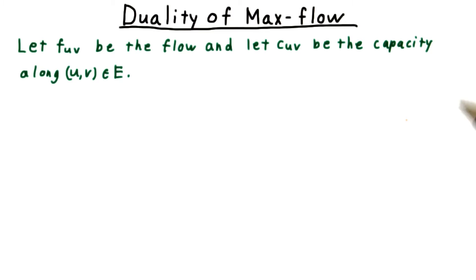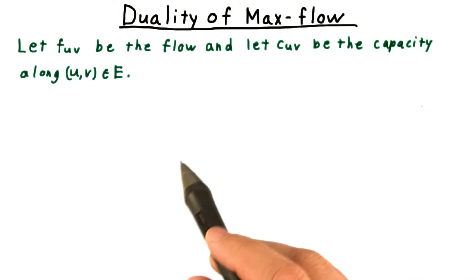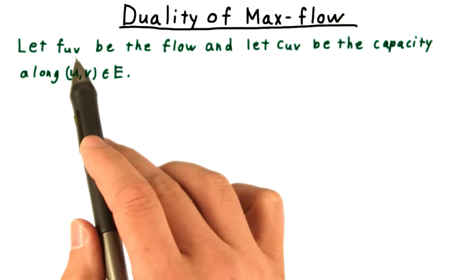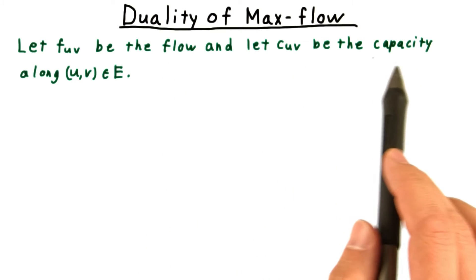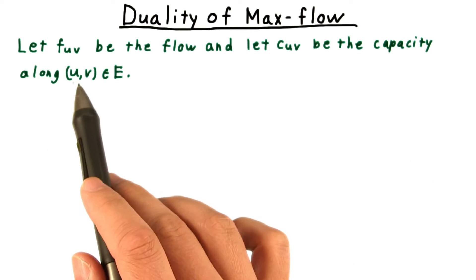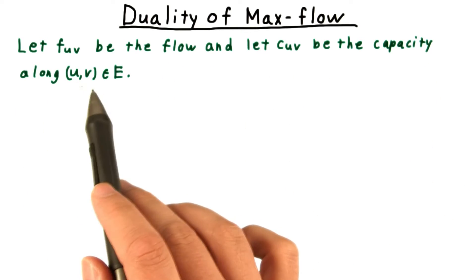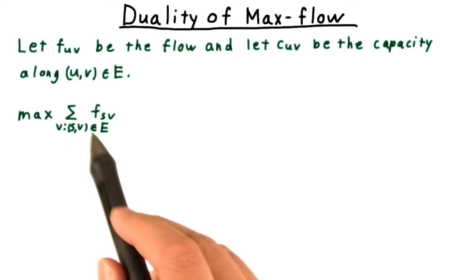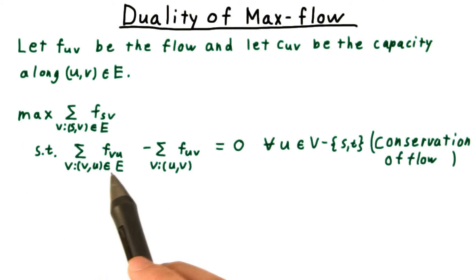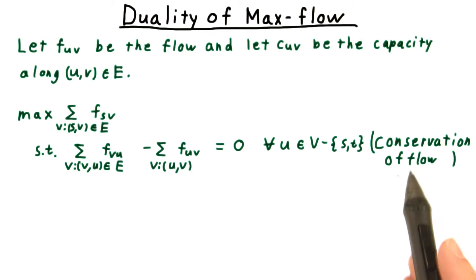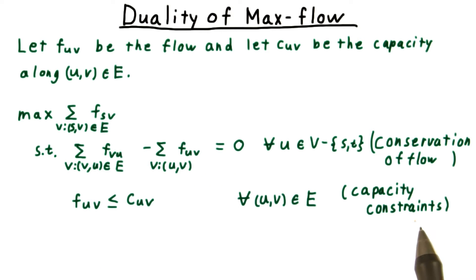For completeness, we'll go ahead and explore duality in the context of the maximum flow problem as well. We can cast it as a linear programming by letting f_uv be the flow and letting c_uv be the capacity along an edge uv. Our goal is to maximize the flow out of the source, subject to the conservation of flow constraint and the capacity constraints.